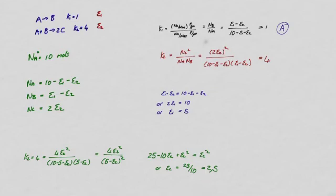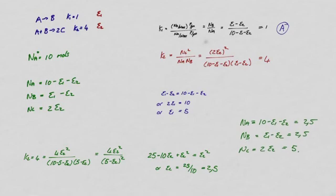I can then work out my number of moles at equilibrium, and what I find is substituting the values that I have for E1, which is 5, and E2, which is 2.5, I get that NA is 2.5, NB is 2.5. Does that make sense? Yes, because the number of moles of A over the number of moles of B must be equal to 1, or NA must be equal to NB, which is correct, and then if I substitute to NC, I get a value of 5.